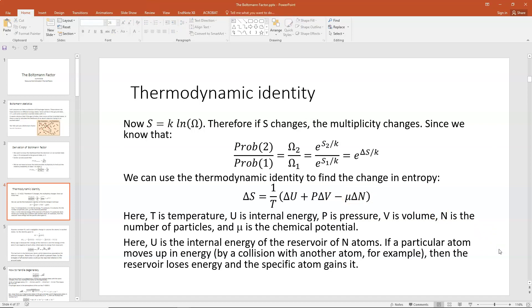Now here, of course, T is the temperature, U is the internal energy, P is the pressure, V is the volume, N is the number of particles, and mu is your chemical potential. U here would be the internal energy of the reservoir of all those atoms, so the N atoms. If a particular atom would move up in energy by a collision with another atom, for example, then the reservoir would lose energy and that atom would gain it. So there's this exchange of energies.